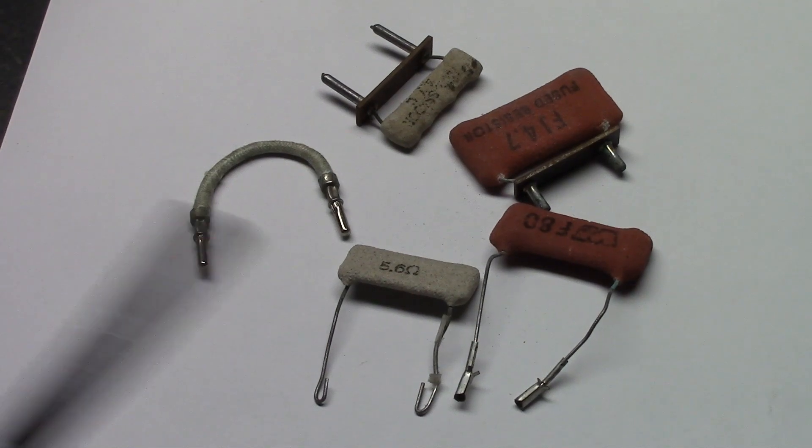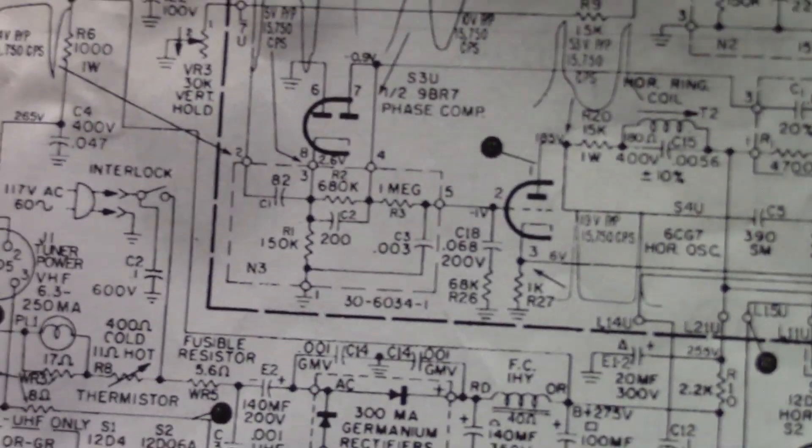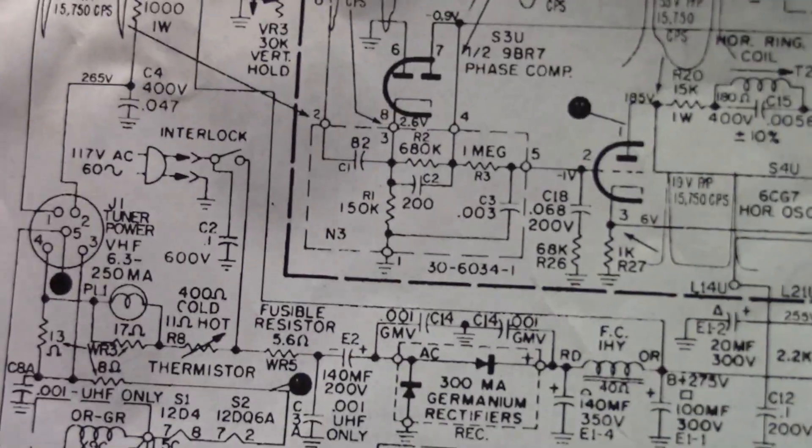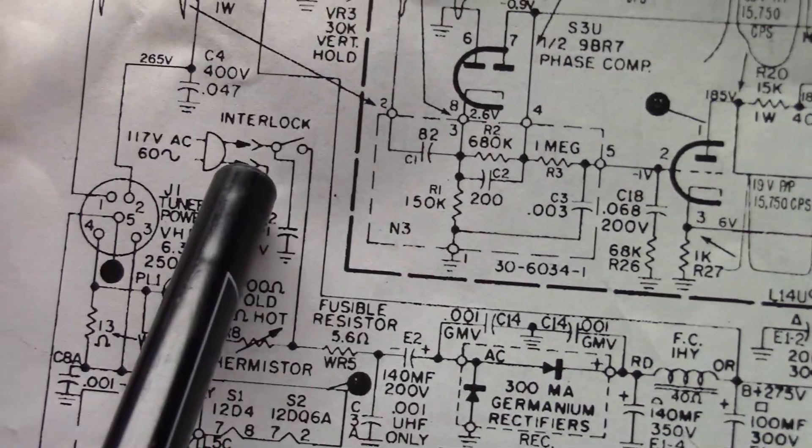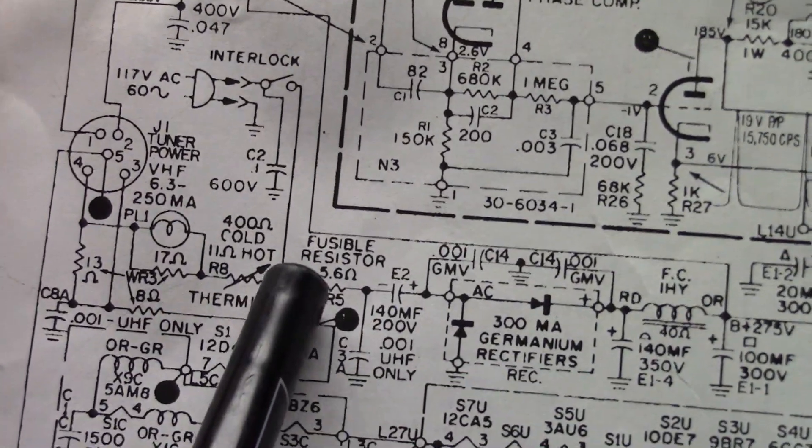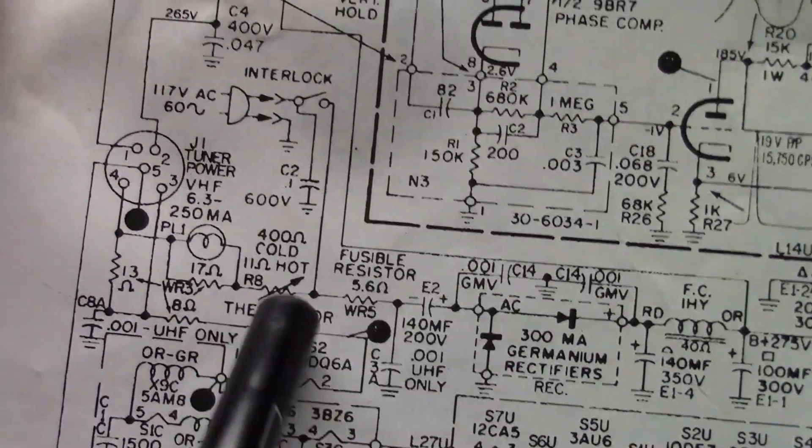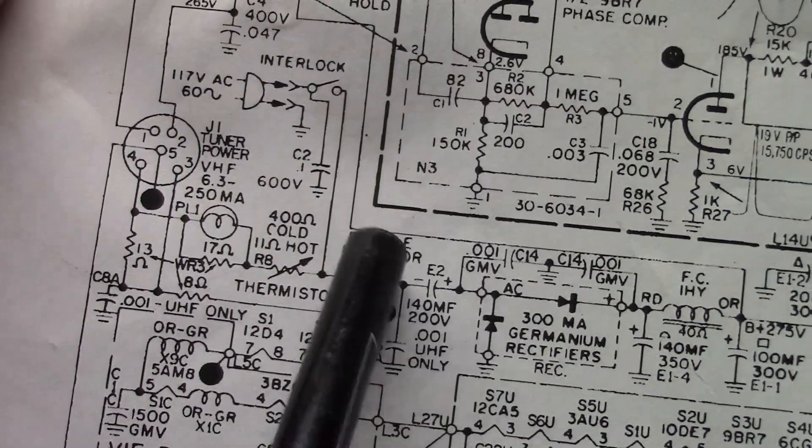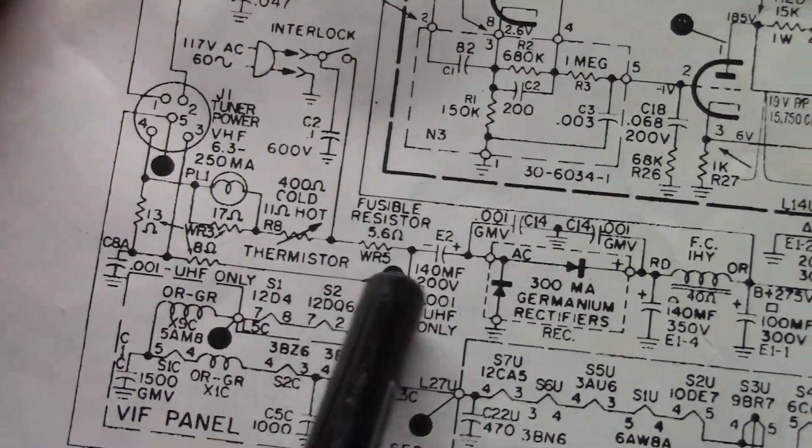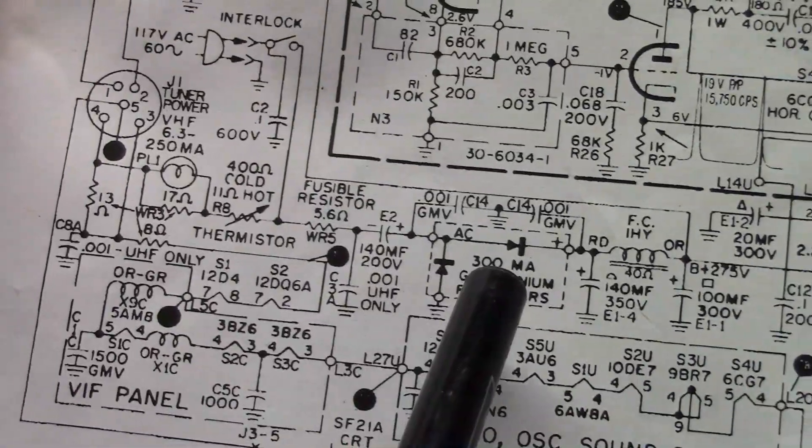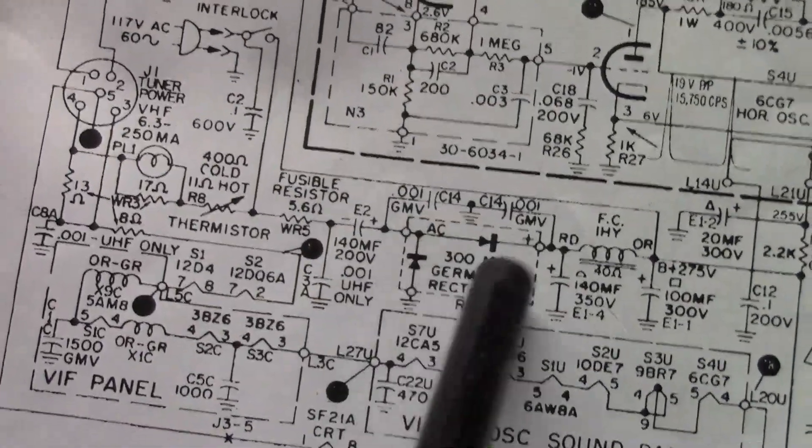Although in a lot of cases, these were used in series-strung sets. For example, the 9L37 and 9L38 Predicta chassis. Here's our AC voltage coming in. It goes off in two directions. One goes through a thermistor, the tube filaments, the other side. There's our fusible resistor. And it goes to an electrolytic, and then actually the germanium diodes.